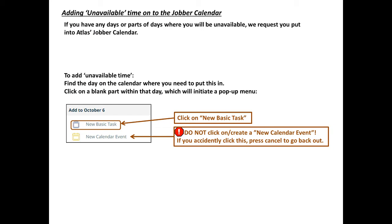We ask that technicians put unavailable time on the Java calendar for days where they know they will be unavailable. To add unavailable time on the calendar, click on the correct month and the correct day. You will see a pop-up showing 'new basic task' or 'new calendar event.' Never choose new calendar event — these are company-wide notices and you want to avoid these.